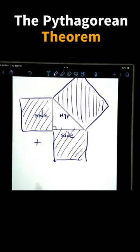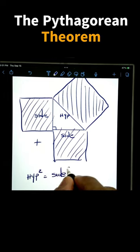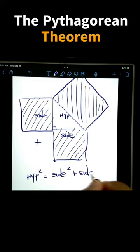And that is why the Pythagorean formula states that the square of the hypotenuse equals the square of one side plus the square of the other side.